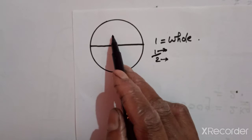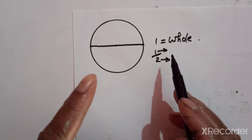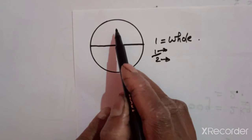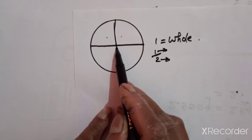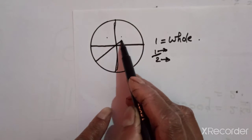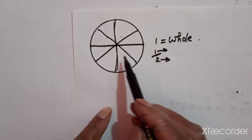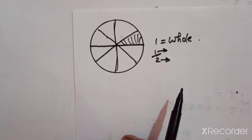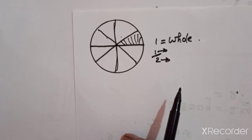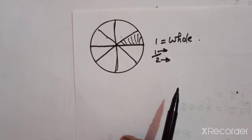The numerator shows how many parts we have, and the denominator shows into how many total parts that one object is divided. If I make another line, it is divided into four equal parts, and now it is total eight equal parts. So fraction means how many parts of a whole object we have — that is a fraction.